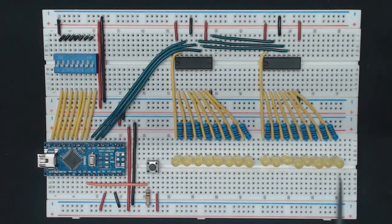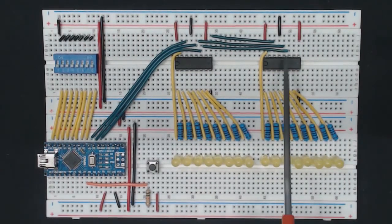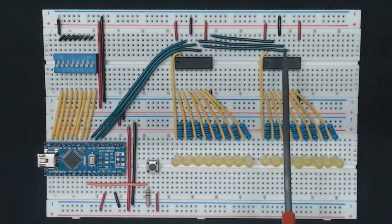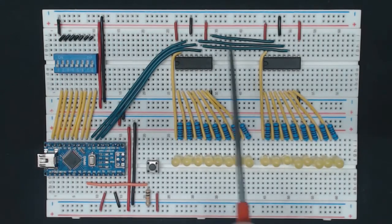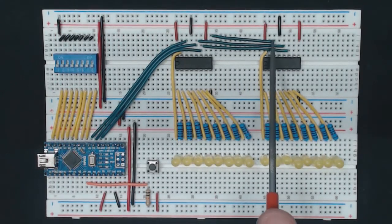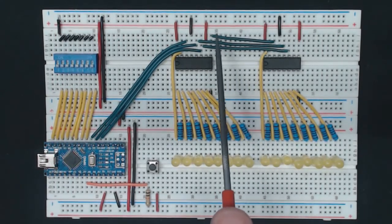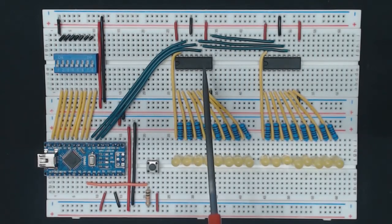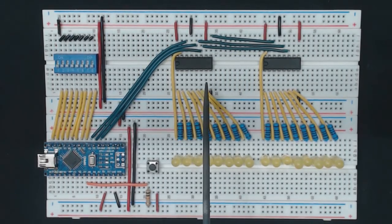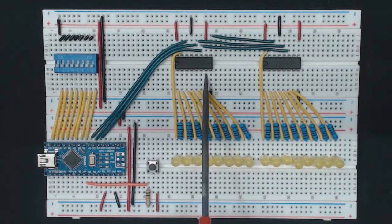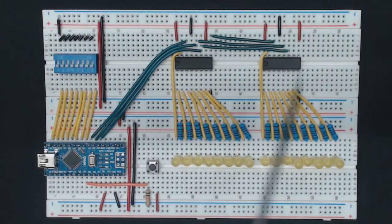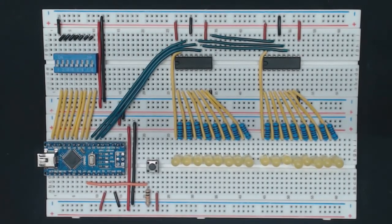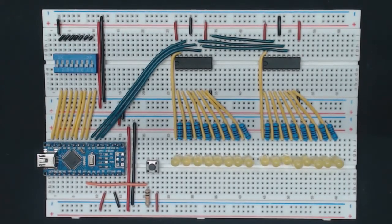I've added a new shift register here and some LEDs exactly the same way we did the first one, and I've daisy-chained them together. To do that, you take the clock and connect it to the previous clock, the latch connects to the previous latch, and the data is sourced using the last output pin of the first shift register. The last output pin is really this one here, but it is mirrored to this pin here, pin 9, so that's the one I used to feed the data into the second shift register. Let's try it out.